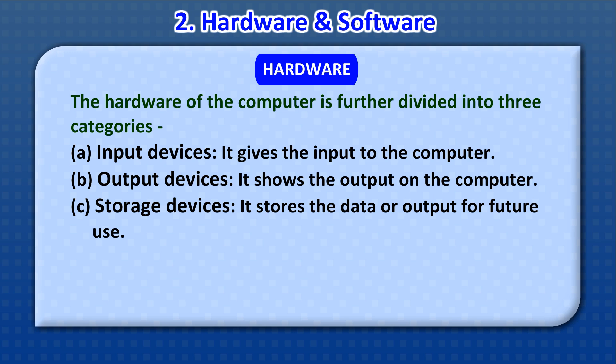The hardware of the computer is further divided into three categories: A. Input devices — it gives the input to the computer. B. Output devices — it shows the output on the computer. C. Storage devices — it stores the data or output for future use.